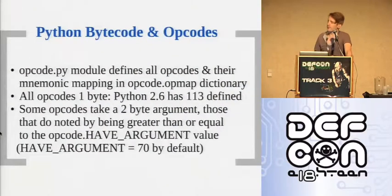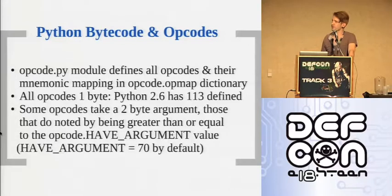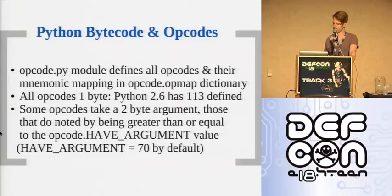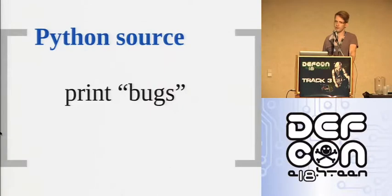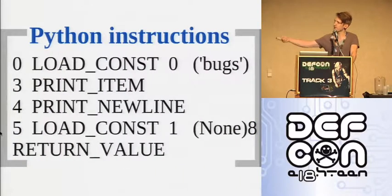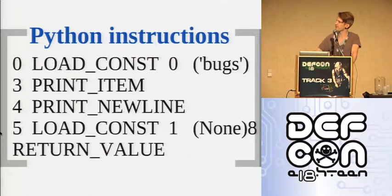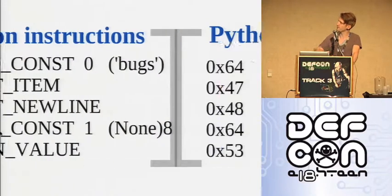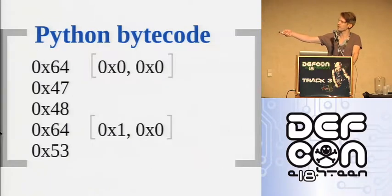Python has a bytecode language. It's pretty simple — every opcode is just an 8-bit opcode, so there are only 256 available. Currently in Python 2.6 there are 113 defined. Optionally one opcode can take arguments, and all arguments are 2 bytes. So for a simple Python source like 'print bugs', when it goes to bytecode instructions you see instruction names that each map to a single integer, and some of them take arguments.